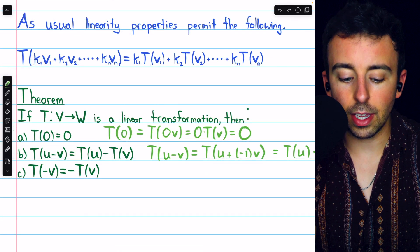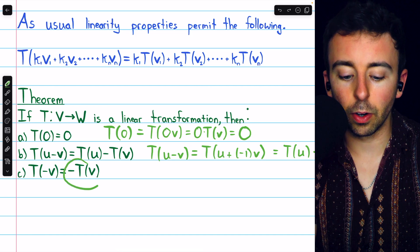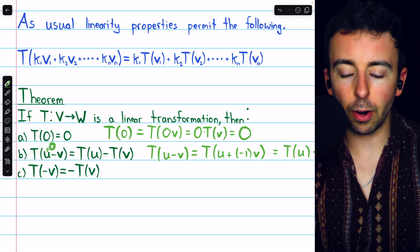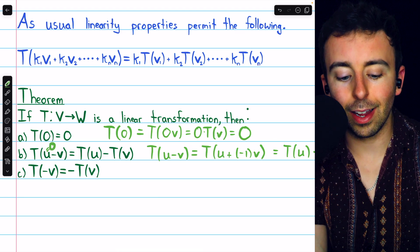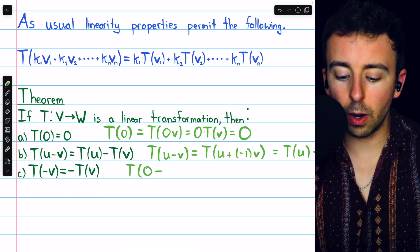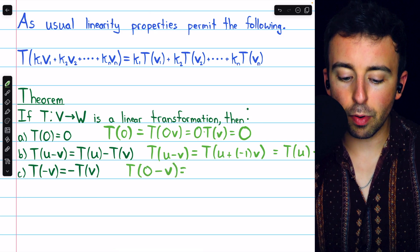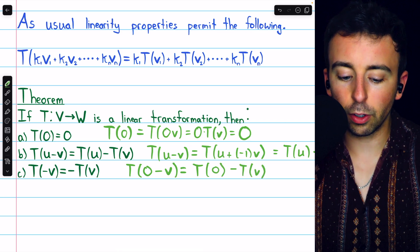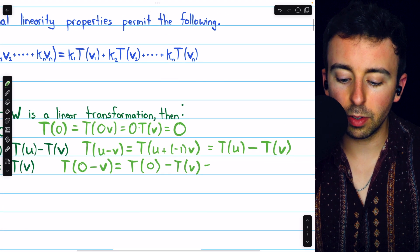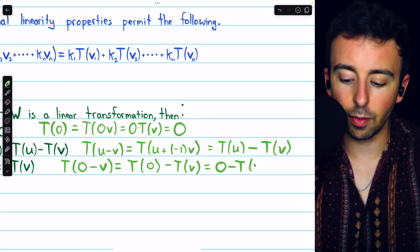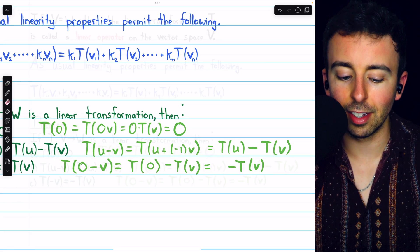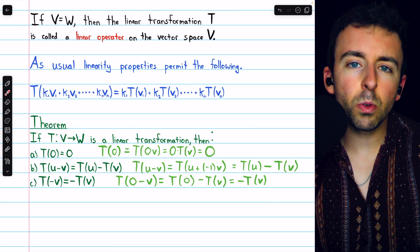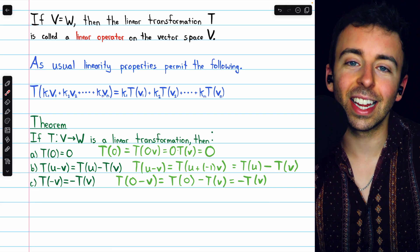The third property — that the image of a vector's inverse is the inverse of the vector's image — can be proved by setting U equal to zero in property B and applying property A. We get T of zero minus V, which by property B equals T of zero minus T of V, and by property A the image of zero is zero, giving us zero minus T of V, or just negative T of V. These basic properties can provide a quick way to determine that something isn't a linear transformation — for example, if a transformation doesn't map zero to zero, it can't be a linear transformation.